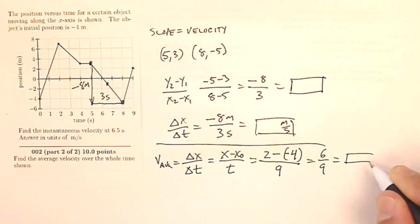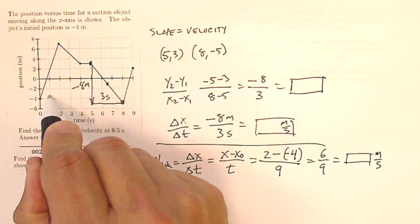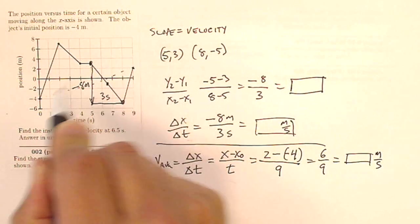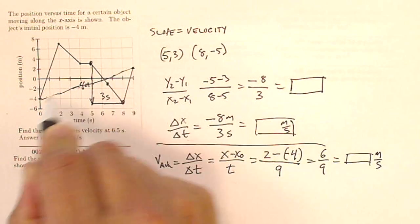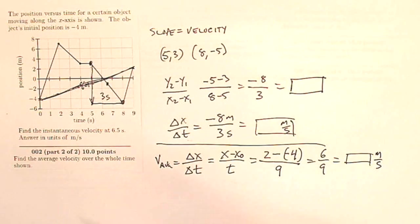And that will give me some amount of meters divided by some amount of seconds. Six over nine is going to give me so many meters per second, and that is my velocity. So that is also equal to the slope of the line segment connecting these two points. So it's rise over run. The slope of this line will give me my average velocity over the whole time shown.